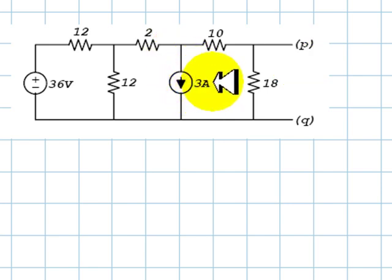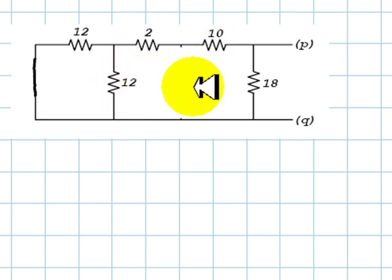We can apply that method because all the sources are independent here. This becomes an open circuit, and this one becomes a short circuit.